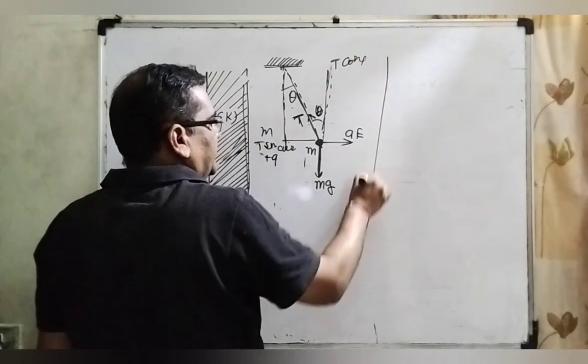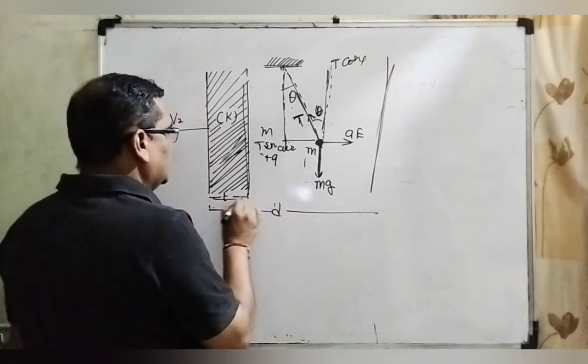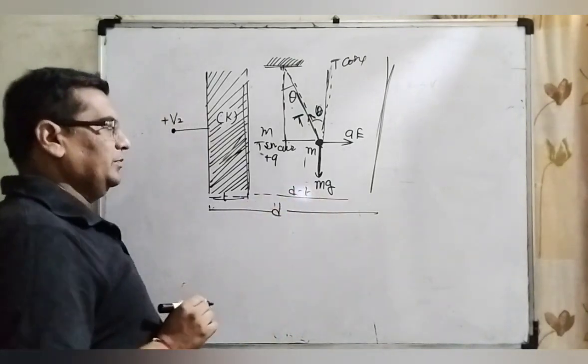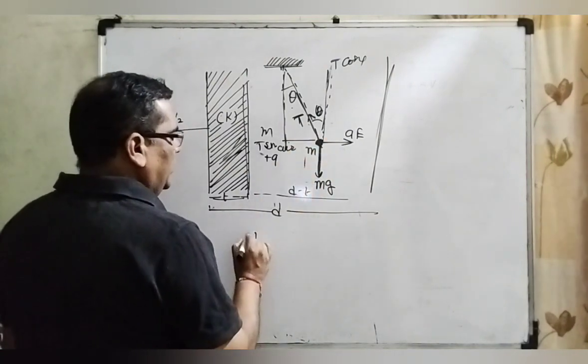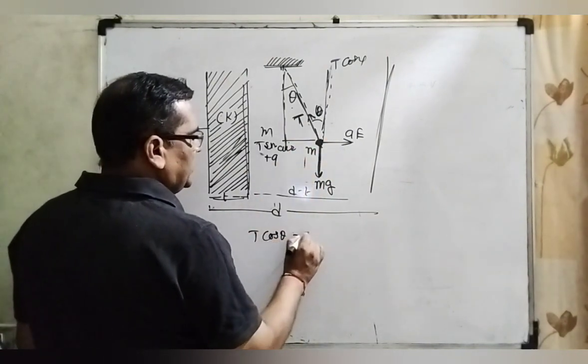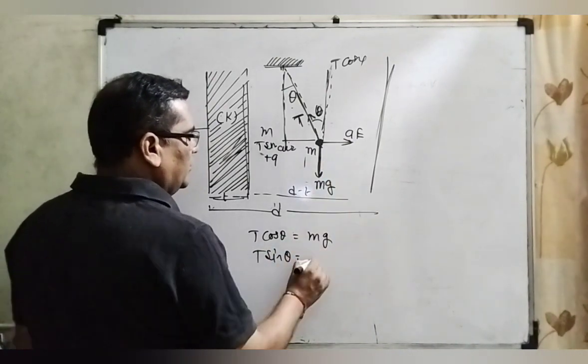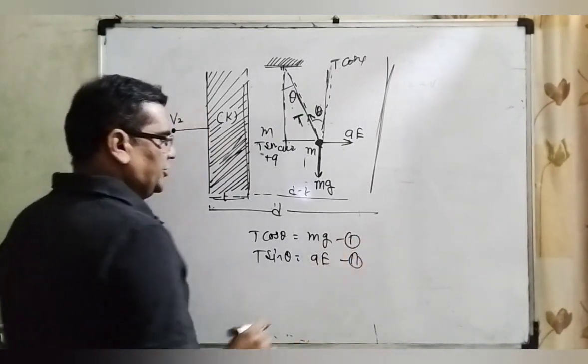And this is the plate which has distance D, its distance is d, then remaining distance is D minus d. Now in equilibrium position, here T cos theta balances mg, and T sin theta equals electrostatic force Q into E. It is first equation, it is second equation.